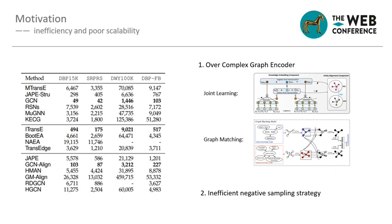We believe there are two main reasons causing high time complexity. One is the over-complex graph encoder — every time a complex technique is introduced in entity alignment, such as deep learning and graph matching networks, time complexity is dramatically increased. The second reason is the inefficient negative sampling strategy: many methods rank all entities to find the k-nearest as negative samples, which requires massive time cost.